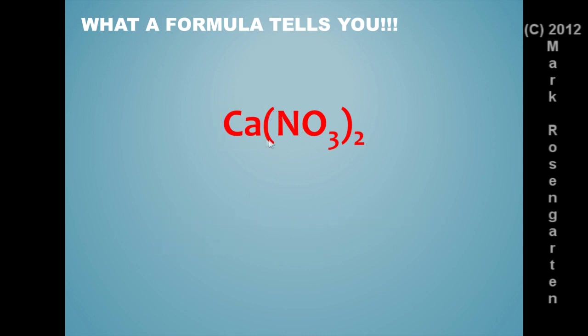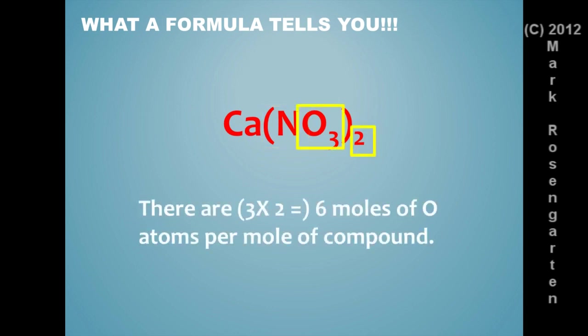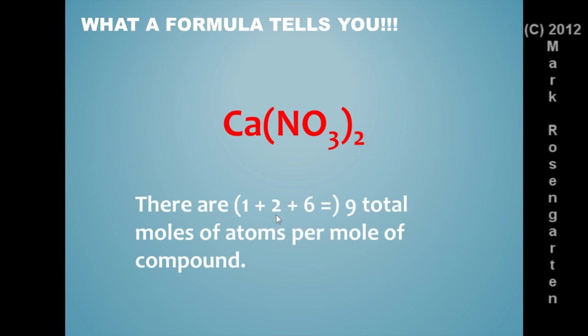there's a two outside the parentheses. Now, just like in math, whatever's outside the parentheses multiplies everything inside the parentheses. So there's going to be two moles of nitrogen atoms per mole of compound, and there's going to be six moles of oxygen atoms per mole of compound. Three times two is six. Now, sometimes we can also add these up.